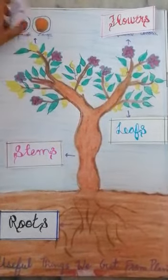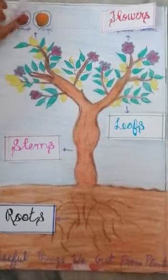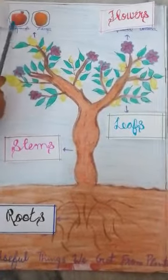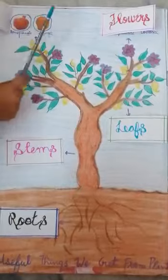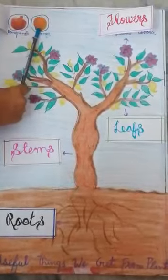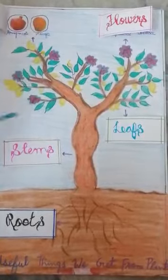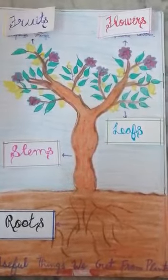From fruit, we get pomegranate, mango, apple, etc.